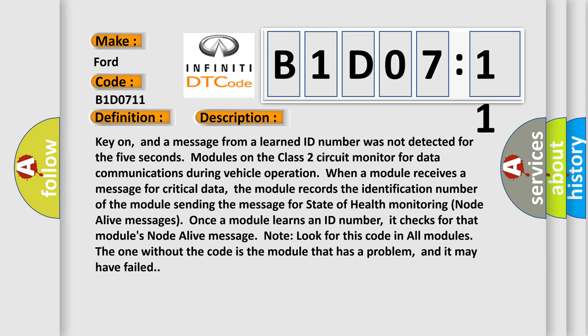And now this is a short description of this DTC code. Key on, and a message from a learned ID number was not detected for the 5 seconds. Modules on the Class 2 circuit monitor for data communications during vehicle operation. When a module receives a message for critical data, the module records the identification number of the module sending the message for state of health monitoring node alive messages. Once a module learns an ID number, it checks for that module's node alive message.